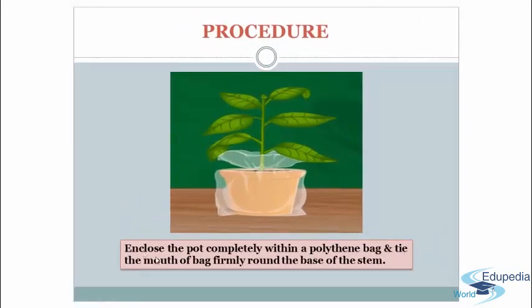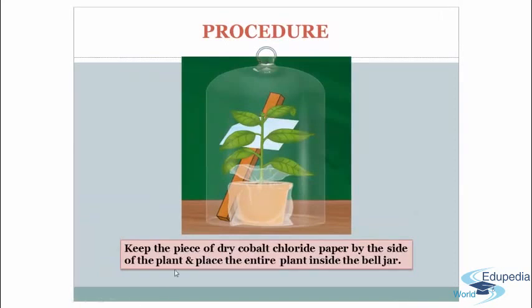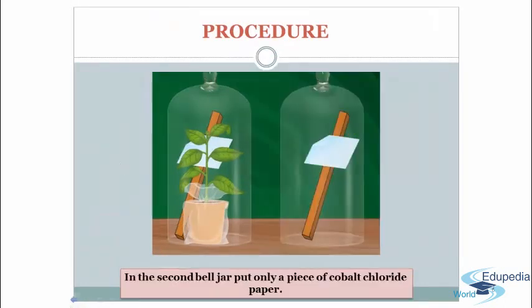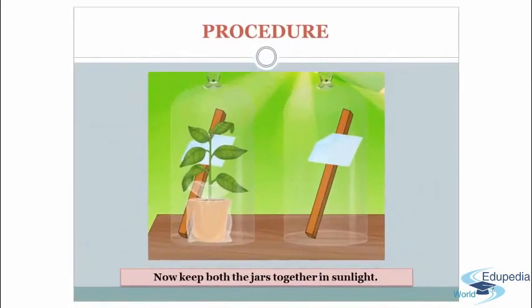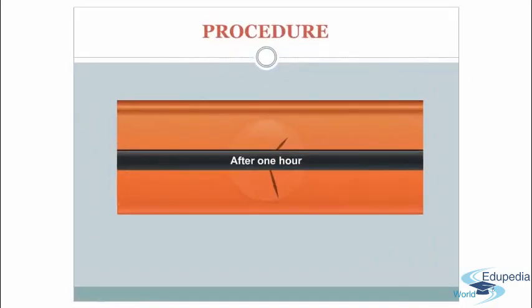For the procedure, enclose the pot completely within a polythene bag and tie the mouth of the bag firmly around the base of the stem. Then keep a piece of dry cobalt chloride paper by the side of the plant and place the entire plant inside the bell jar, along with the wooden stick. In a second bell jar, only a piece of cobalt chloride paper is kept — no plant. Keep both jars together in sunlight and wait for one hour.